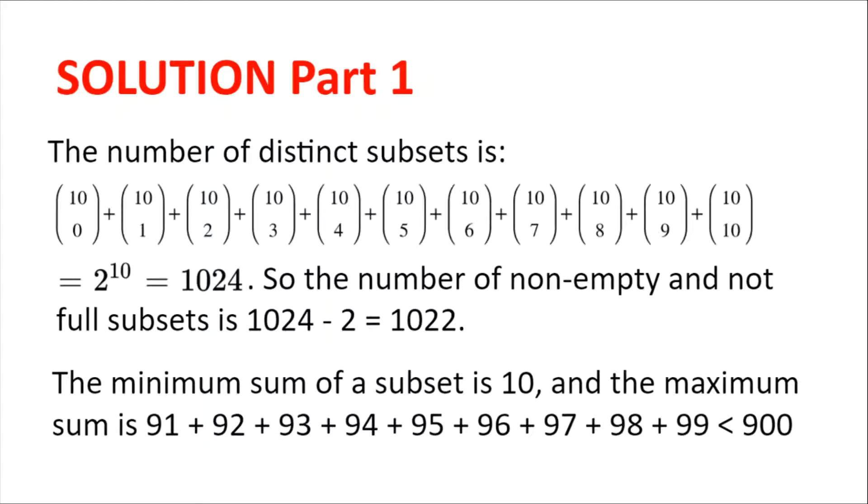Solution. First we are going to count the number of distinct subsets. We will count the number of subsets of length 0, 1, 2, 3, all the way to 10 separately, and we get 10 choose 0, plus 10 choose 1, plus 10 choose 2, all the way to plus 10 choose 10. This is the tenth row of Pascal's Triangle, and so the sum is 2 to the power of 10, which is 1024.